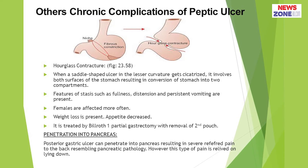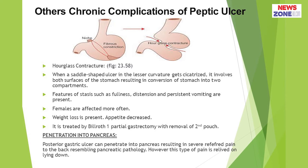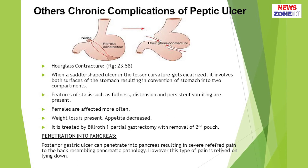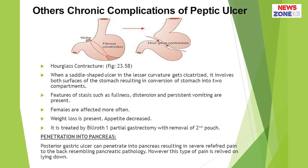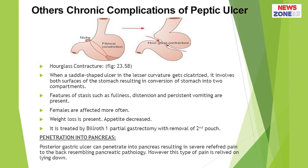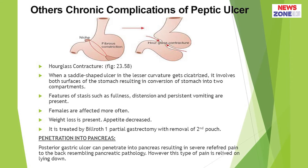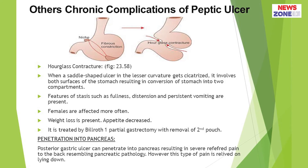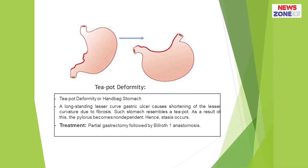Another chronic complication of peptic ulcer disease is penetration into the pancreas. A posterior gastric ulcer can penetrate into the pancreas, resulting in severe referred pain to the back, resembling pancreatic pathology. However, this type of pain is relieved on lying down. The gastric ulcer, not the duodenal ulcer, may penetrate into the pancreas.